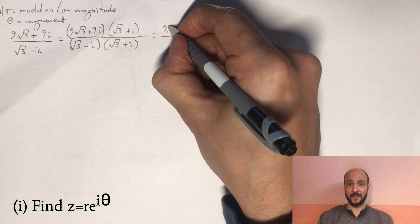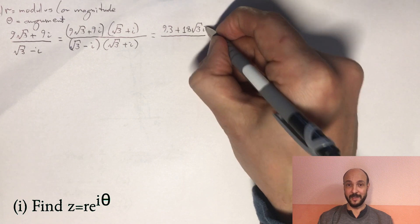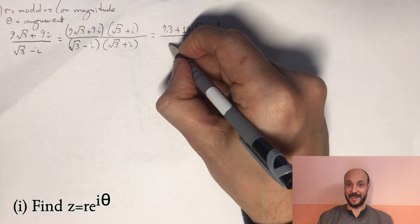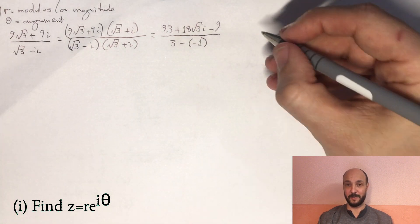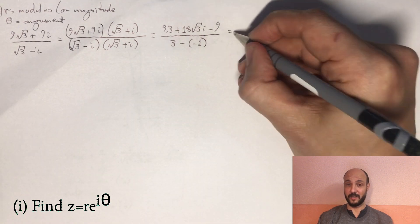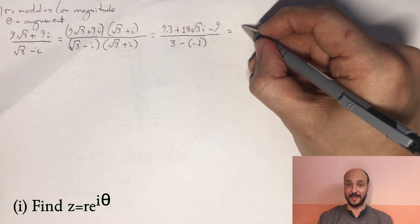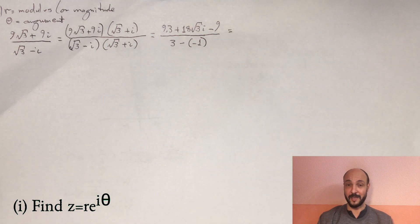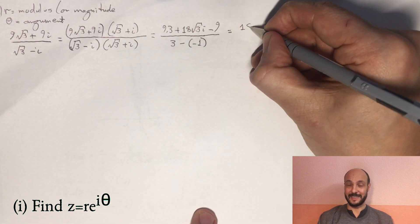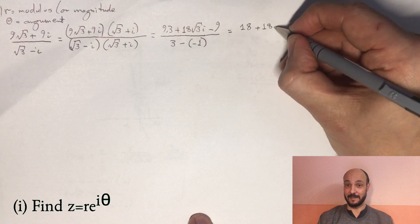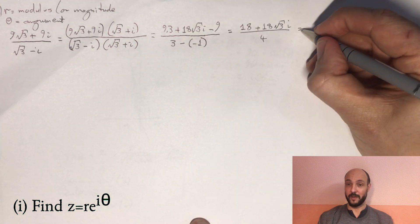So if we expand out the terms at the top of our fraction, we've got 9√3 times by √3 is 9 times 3. And we've got 9√3 times i and 9i times by √3, which gives us plus 18√3i. And then we've got 9i times by i, which gives us minus 9. And on our denominator, using our difference of two squares formula, √3 - i times by √3 + i equals (√3)², which is 3 minus i², which is minus 1. So if we simplify that a little, 9 times 3 minus 9 is 18 plus 18√3i on our numerator. And 3 minus the negative 1 is 4 on the denominator.